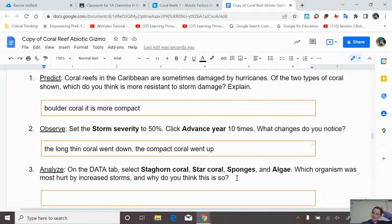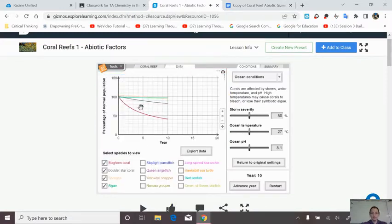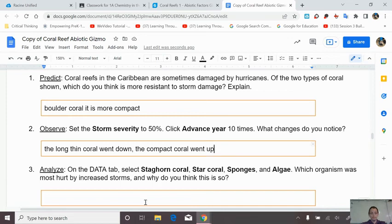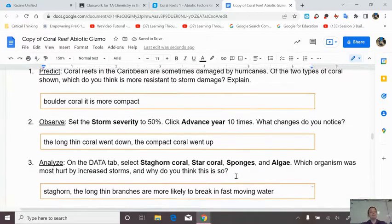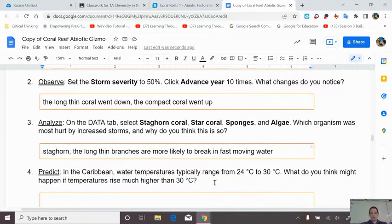So here we go. Storm severity to 50%. Let's see if we're right. I love knowing if we're right or not. And then advance 10 times. Now we're keeping an eye on the two types of coral when we do this. And look at that, we were right. Yay, us. What changes did you notice? The long, thin coral, staghorn coral, went down. Compact coral went up. Just what we predicted.